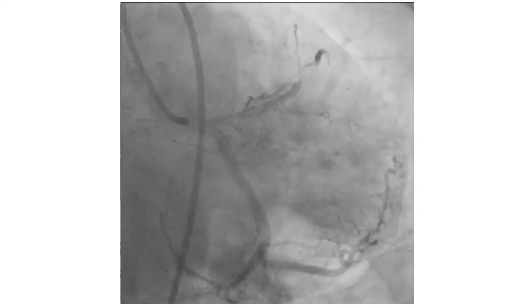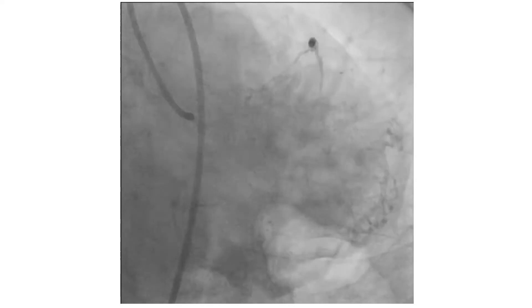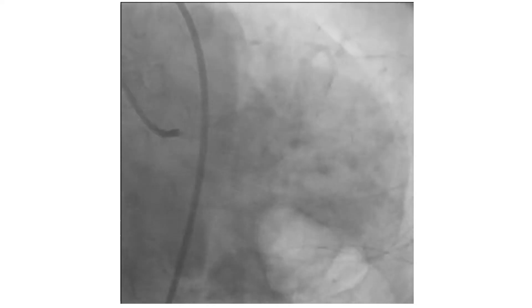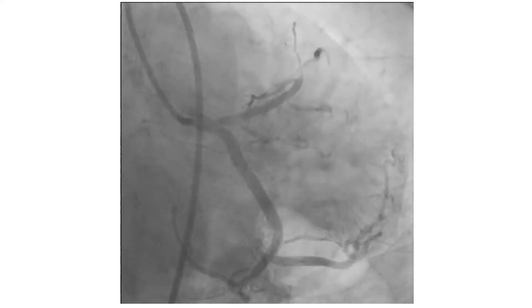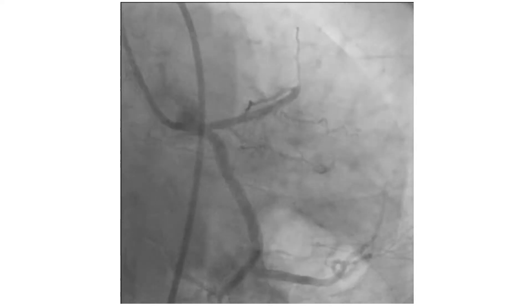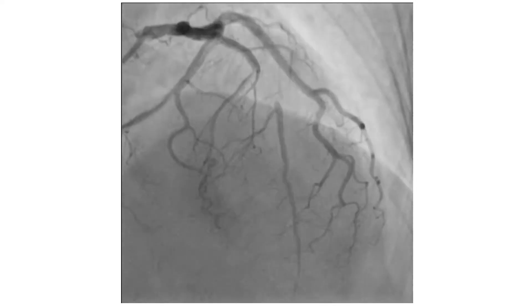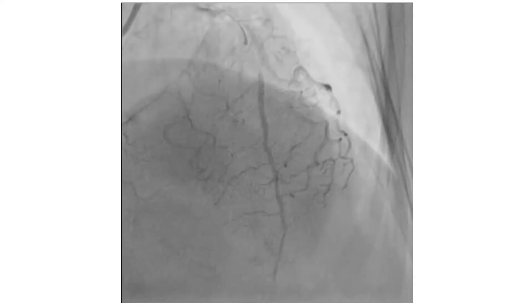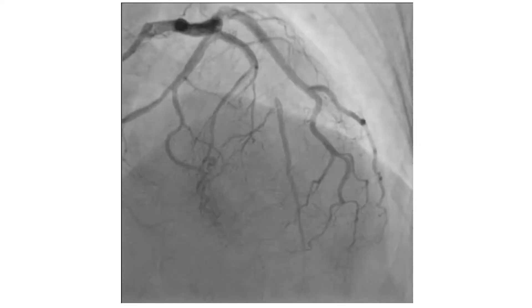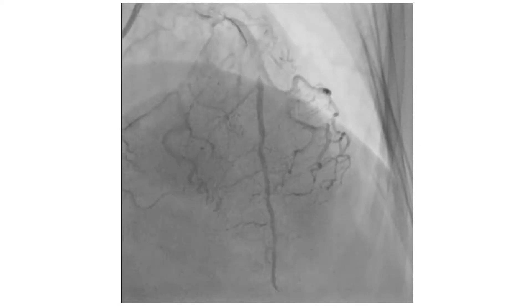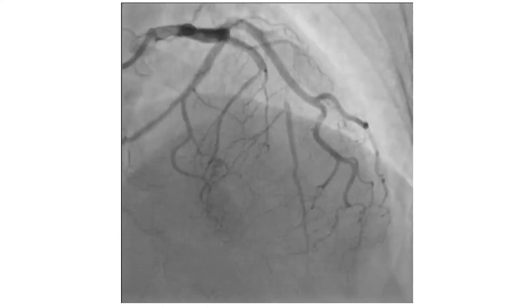This is a bicaudal view of the left coronary system. It shows a dominant left circumflex. The LAD has ostial plaque and a lesion at the distal part, which looks to be totally occluded and receives ipsilateral flow from septal to septal.